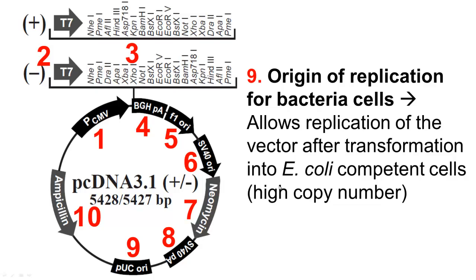Number nine is another origin of replication, but for bacterial cells specifically — the pUC origin. This allows replication of the vector after you transform your plasmid into competent cells, usually E. coli such as DH5-alpha. If you don't get replication, you won't be able to extract the plasmid after growing the bacteria. The pUC origin is very important, and specifically it will give you a very high copy number — about 500 to 700 copies per cell — so it's very efficient.